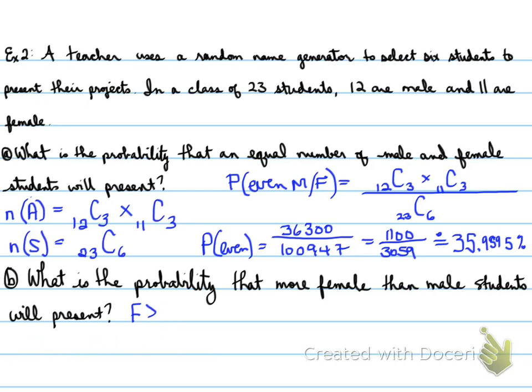Now, the next part, we want to look at the question. What is the probability that more female than male students will present? Well, the probability here is female greater than male. So n(A) the number of female greater than male is equal to 12 male choose 2 times 11 female choose 4 plus,